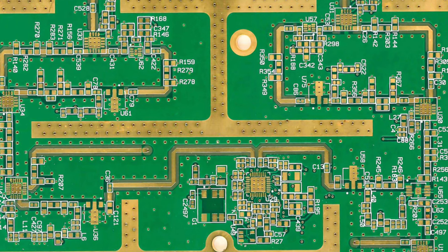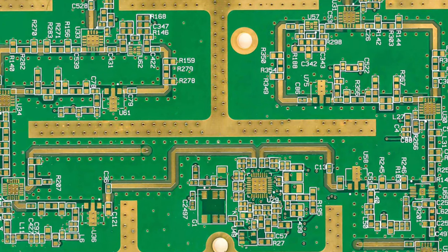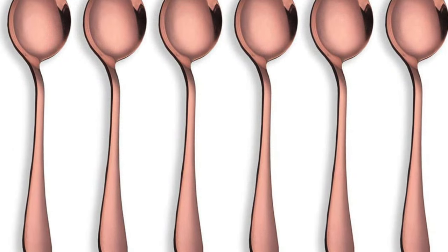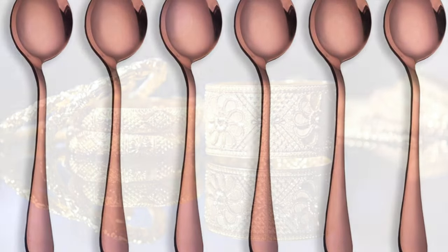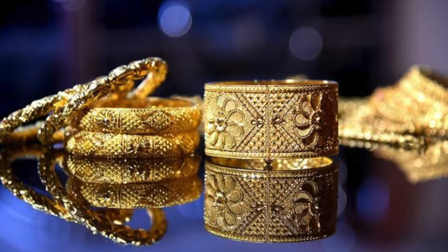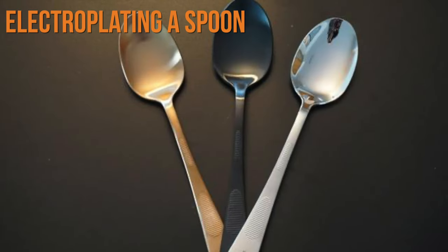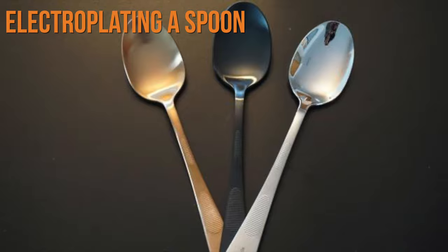Nickel and chromium are widely used in the automobile industry for coating. Electroplating is used in the manufacture of printed circuit boards, which are used in TVs, computers, etc. Electroplating is also used for decoration. Cutlery, statues and jewelry made of cheaper metals are coated with expensive metals like gold and silver to enhance their look.